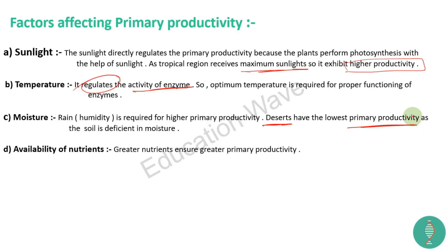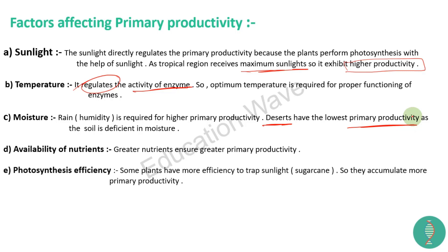Photosynthesis efficiency bhi ek important factor hai. Some plants have more efficiency to trap sunlight - jaise ki sugarcane mein hota hai, uski efficiency ki woh sunlight ko kitna zyada trap kar sakta hai. Kuch jo plants hote hain unki efficiency bahut zyada hoti hai ki woh sunlight ko bahut zyada acche se trap kar paate hain. To obviously agar unhone zyada trap kar liya to unke andar jo primary productivity hoti hai woh bhi zyada increase ho jaati hai. Aur plant species inhabiting a particular area - obviously agar aap area badha doge to productivity bhi zyada increase hogi. Chhota area hoga aur plant species kam hain to primary productivity utni kam hogi. These are the factors which are affecting our primary productivity.